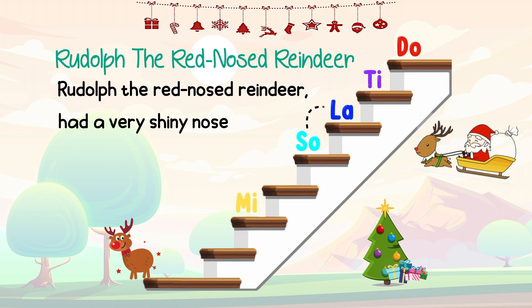The ascending interval of second happened quite a few times in this song. Listen — 'Rudolph had a very' — this is Sol-La. Interval of second. Did you hear it? Yes, I did.